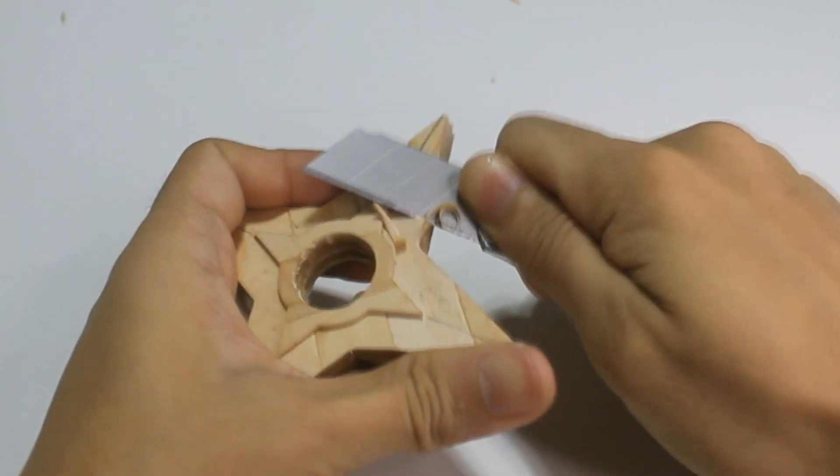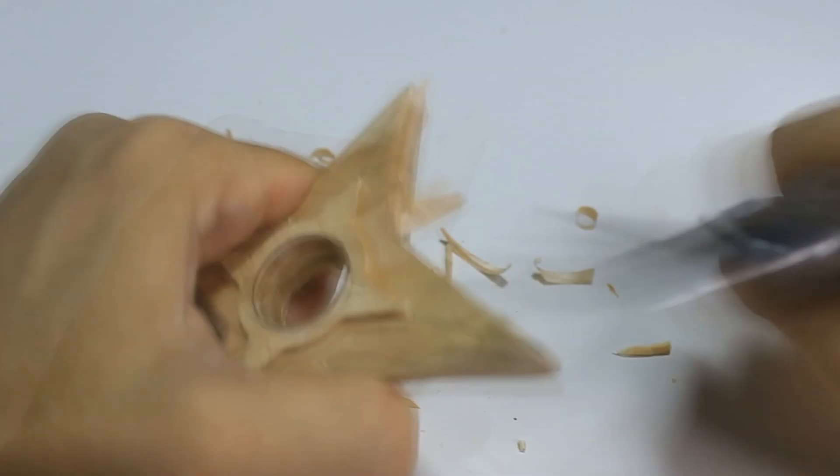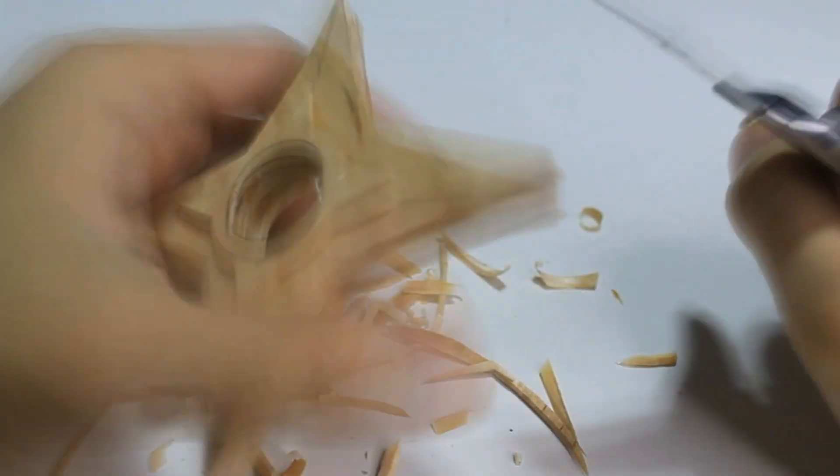Trim all sides of the shuriken. This will minimize our sanding process to shape the shuriken perfectly.